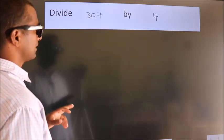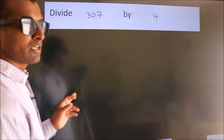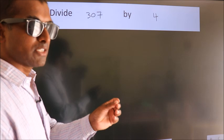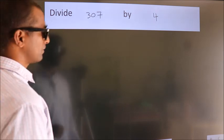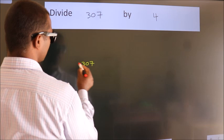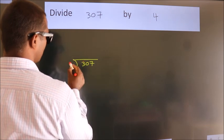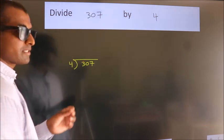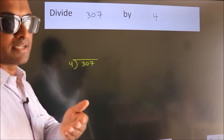Divide 307 by 4. To do this division, we should frame it in this way. 307 here, 4 here. This is your step 1. Next.